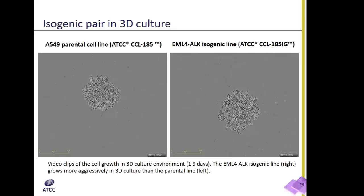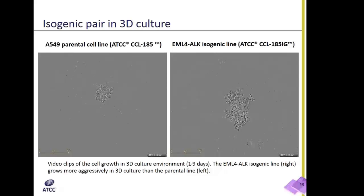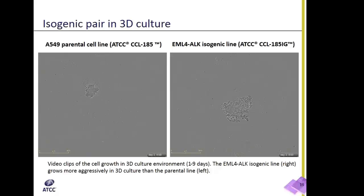I'd now like to show you a video clip of side-by-side growth of the Parental A549 line and our EML4 mutant grown in a 3D culture environment over the course of nine days. The Parental line is shown in the left clip and the EML4 isogenic line on the right. As we observe the tumor formation and growth, we can clearly see the difference in development and size of the spheroid mass even within a few days.